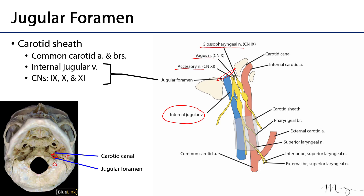Just anterior to the jugular foramen, there is an opening in the temporal bone called the carotid canal, which is the passageway through which the internal carotid artery enters the cranial vault. All of these features together are surrounded by condensations of deep cervical connective tissue, or fascia, that comprise something called the carotid sheath.